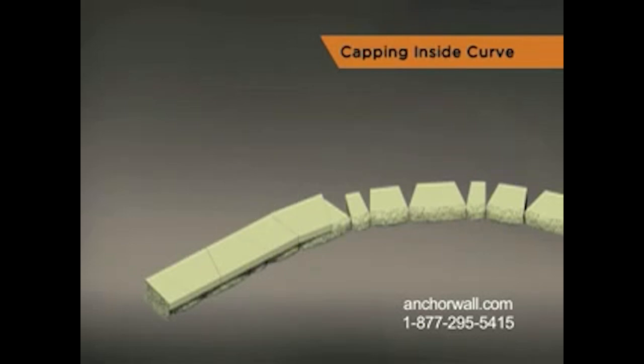Once the wall starts to curve, start by placing a cap unit short side to the front with proper reveal. Then lay a second cap short side to the front at a distance from the first cap slightly less than a full cap away.